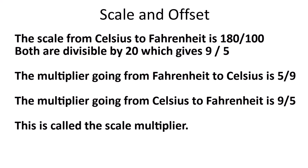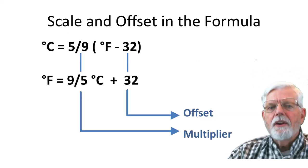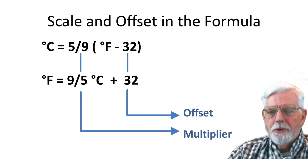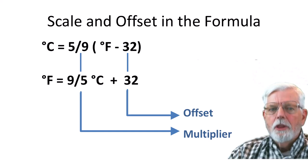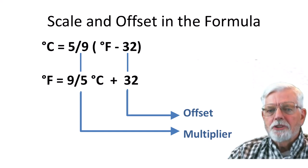We also need to consider the 32 degrees difference in freezing that occurs for Fahrenheit. This is called the offset, which needs to either be added or subtracted. That offset is used to adjust for the difference in the definition of 0 degrees. The multiplier is used to adjust the scale from water freezing to water boiling.